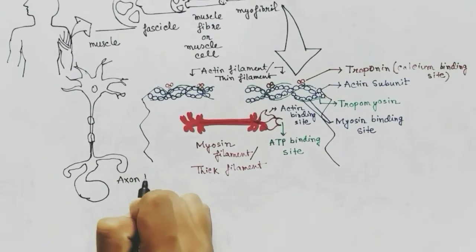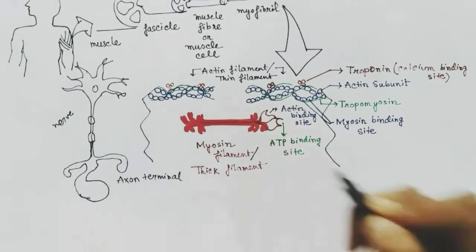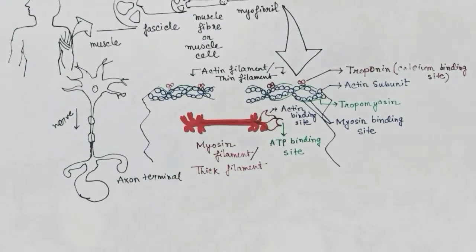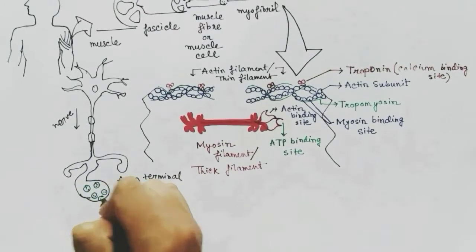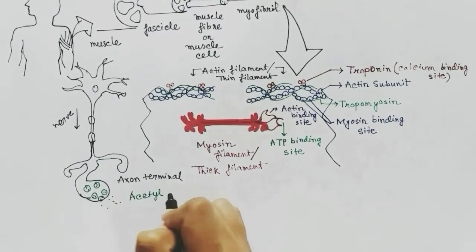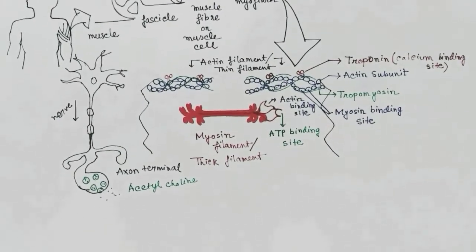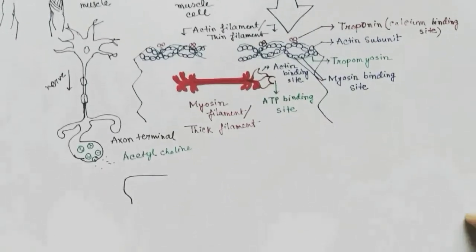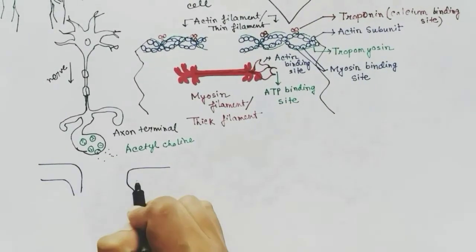Muscle contraction starts when a nerve impulse reaches the muscle. When the nerve impulse appears at the axon terminal, the axon terminal releases acetylcholine. There is a structure in the myofibril surrounding the thick filament and thin filament, and this structure is called the sarcoplasmic reticulum.